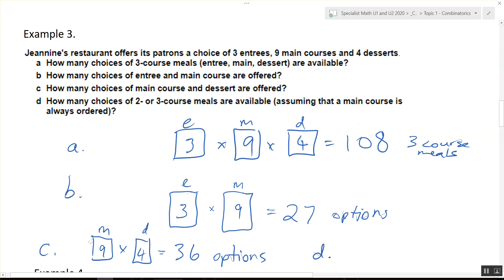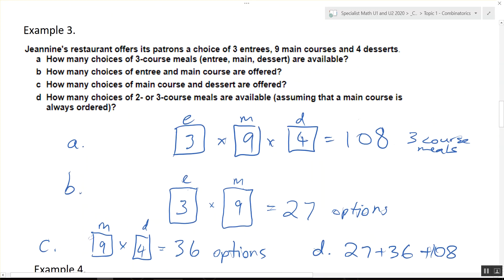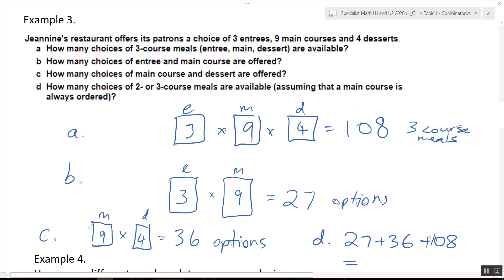How many choices of two or three-course meals? So we're not going to use multiplication, we're going to use addition. So we do 27 plus 36 plus 108. Did anyone do it? 171 options. So there you go, lots of choices when you go to the restaurant.